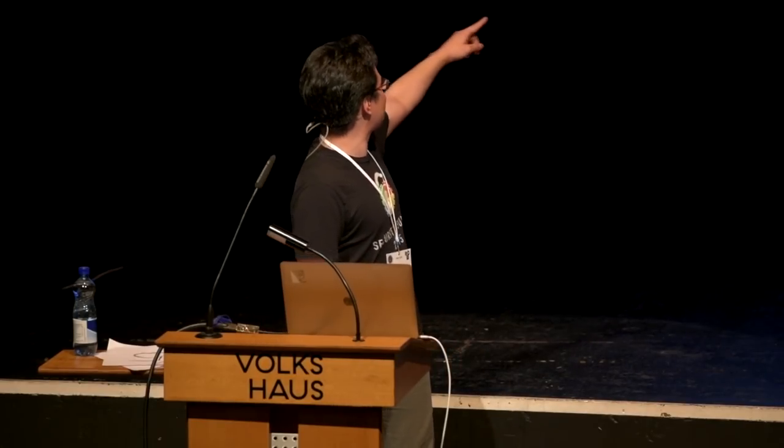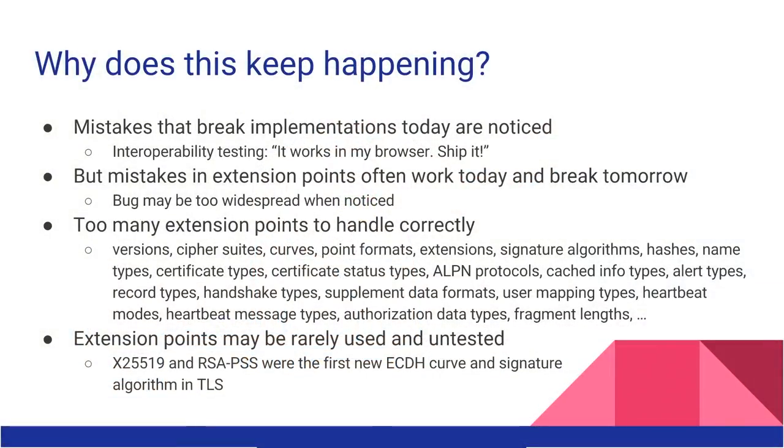Problems with extension points are usually latent — they will work today and break tomorrow, because it doesn't matter that you break on unrecognized curves when you know all the curves that exist today. Tomorrow we're going to define a new one, and then you break. TLS has far too many extension points — there's a long list of IANA registries, and there's too many of these. Our changes are spread across them: today a new curve, tomorrow a new cipher suite. Each individual extension point is very rarely used and frequently untested. When we added x25519 in Chrome, that was the first time in the history of TLS anyone ever deployed a new curve. It was just dumb luck this worked at all.